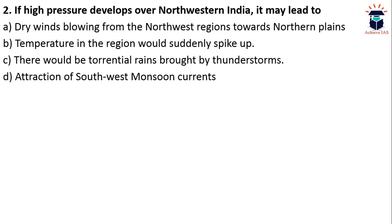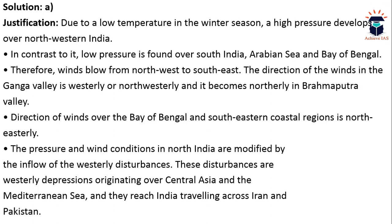Next question: if high pressure develops over northwestern India, it may lead to — A: dry winds blowing from northwest regions towards the northern plains; B: temperature in the region would suddenly spike up; C: there would be torrential rains brought by thunderstorms; D: attraction of southwest monsoon currents. The answer is A. When high pressure develops, dry winds blow from this region towards the northern plains, because winds always flow from high pressure to low pressure.